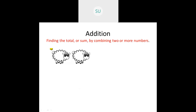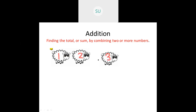Here I have 2 sheep - this is 1 sheep and then 2 sheep. These 2 sheep are in the farm. Then another sheep came and joined these 2 sheep in the farm. Now how many sheep are there in the farm in total? I have 1, 2 and 3 sheep.